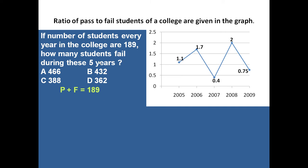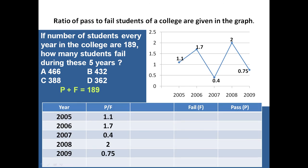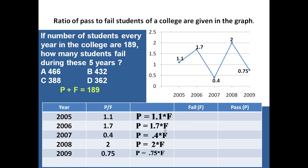Let us prepare a small table for years 2005, 2006, 2007, 2008, and 2009, with the pass-to-fail ratio p/f as given in the graph: 1.1, 1.7, 0.4, 2, and 0.75 respectively. This means p equals 1.1f, p equals 1.7f, p equals 0.4f, p equals 2f, and p equals 0.75f for each respective year.